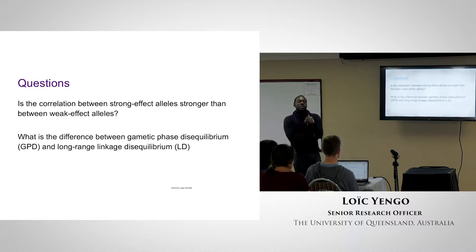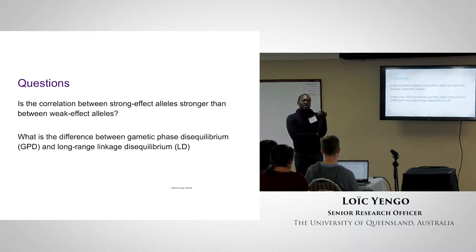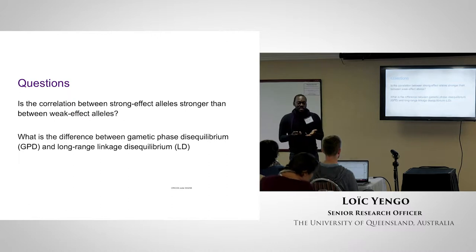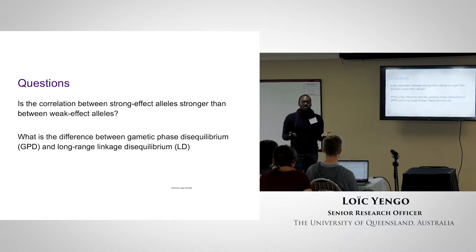I think it will increase the variance if there is positive assortative mating. I sort of assumed that the general pattern for assortment is positive — if you're tall, you're more likely to go for a tall partner. We were talking about that yesterday at dinner. I'm not aware of many examples of negative assortment. Maybe personality — you may want to balance your personality. But most of the evidence we have shows positive assortment, and because of that positive assortment, you expect that increase of variance.